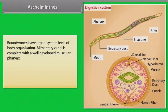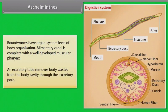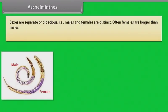The alimentary canal is complete with a well-developed muscular pharynx. An excretory tube removes body waste from the body cavity through the excretory pore. Sexes are separate, that is dioecious — males and females are distinct. Often females are longer than males.